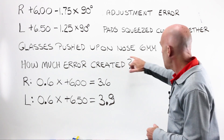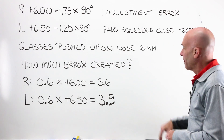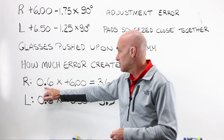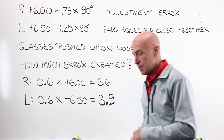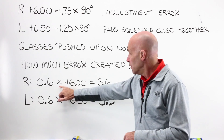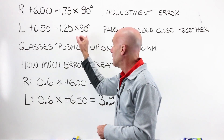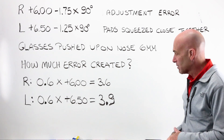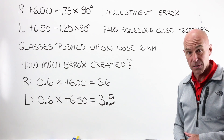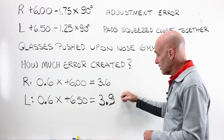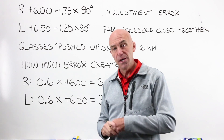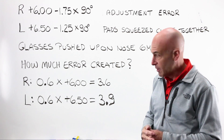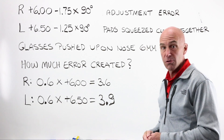Our prescription is already written for the power at 90, so we don't need the powers in oblique meridians formula here. How much were the glasses pushed up? Six millimeters. Prentice's formula calls for centimeters, so we divide 6 by 10, which gives us 0.6. Multiplied times our power at 90, that gives us a total prism error of 3.6 and 3.9 for each of the individual lenses. By now you know that tells us nothing — it's only after we do the next step that we can determine the actual total amount of prism error created.